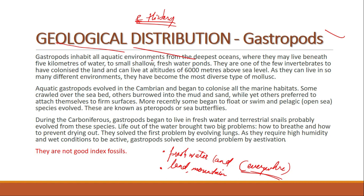Gastropods inhabit all aquatic environments, from the deepest oceans where they may live beneath 5 kilometers of water, to small shallow freshwater ponds. They are one of the few invertebrates to have colonized the land and can live at altitudes of 6,000 meters above sea level. Because they can live in so many different environments, they have become the most diverse type of Mollusca.